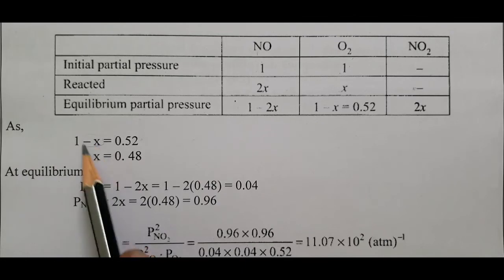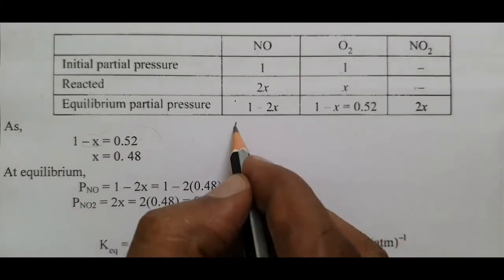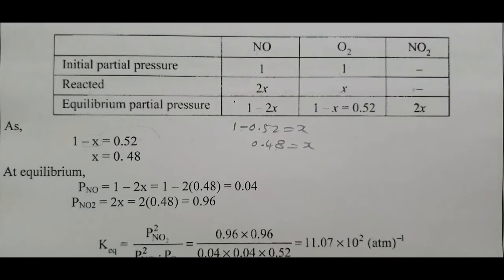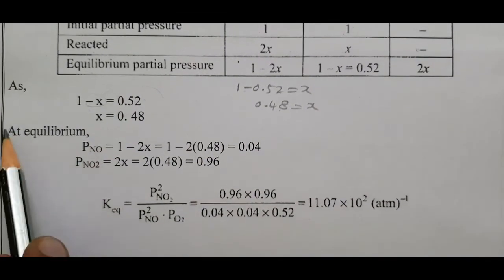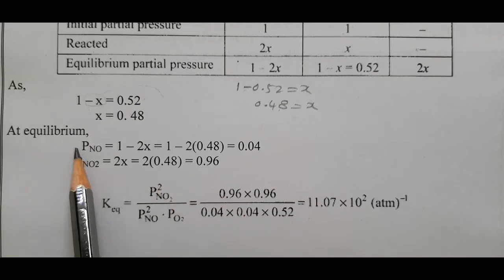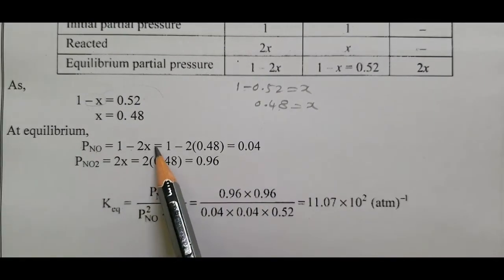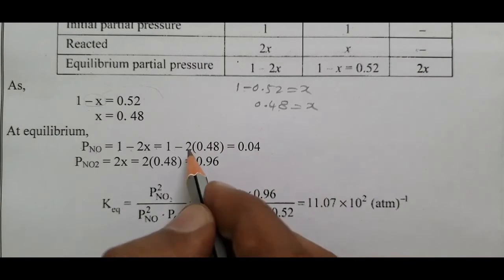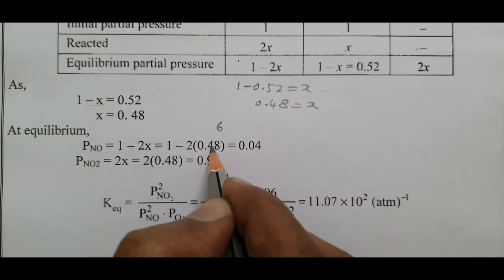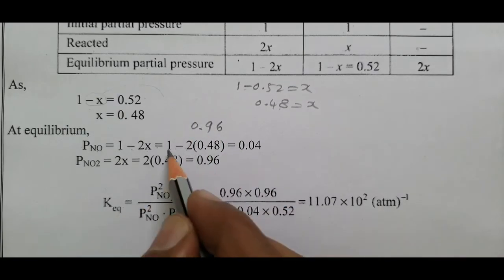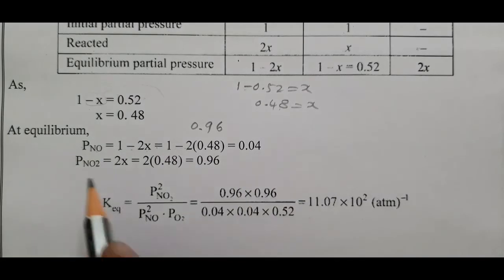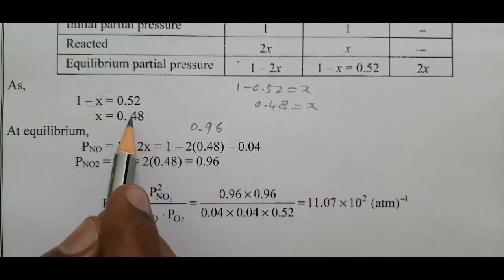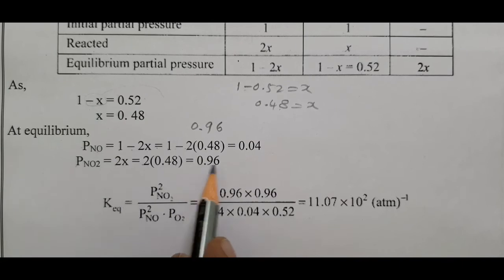Therefore x = 0.48. The partial pressure of NO equals 1−2x. So 1−2(0.48) = 1−0.96 = 0.04. The partial pressure of NO₂ at equilibrium equals 2x = 2×0.48 = 0.96.